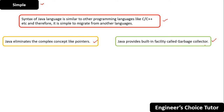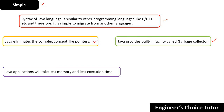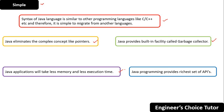Java applications take less time to execute and less memory as well. Additionally, Java provides the richest set of APIs — predefined functions and predefined methods — that you can directly use to get your work done.